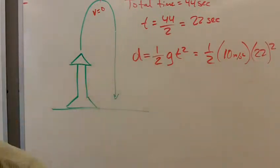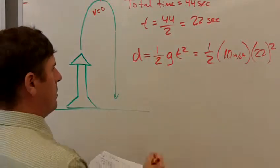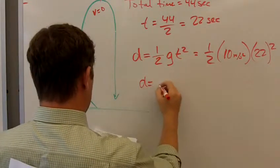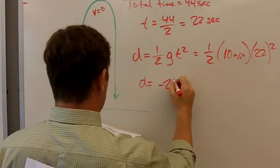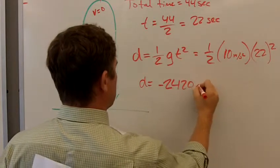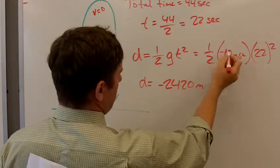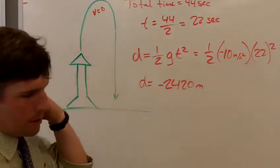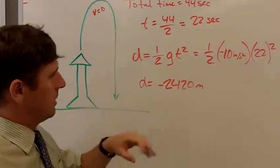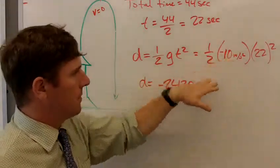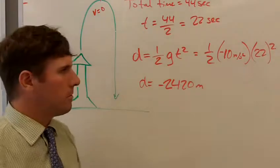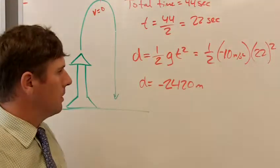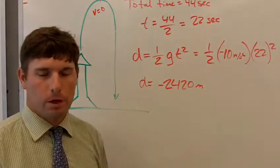22 seconds squared. And if you do all that math out, you should come up with a distance that is about negative 2,420 meters. Now, of course, it's negative because when I did this, I actually did put a negative sign in there. So I'm not worried about the negative sign when we're talking about distance. With velocity, I am because I want to know which direction you're talking about, up or down. Free fall.